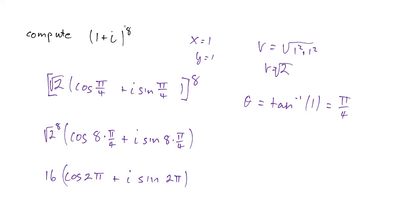And we were given our initial problem in rectangular coordinates, so we should convert this back to rectangular coordinates. That basically just means let's not have any cosines or sines left in it. So our final answer is, we just compute this. Cosine of 2 pi is 1, sine of 2 pi is 0. So this is going to be 16 times 1 plus 0, it's going to be 16. So 1 plus i all to the 8th is 16. And there you have it.